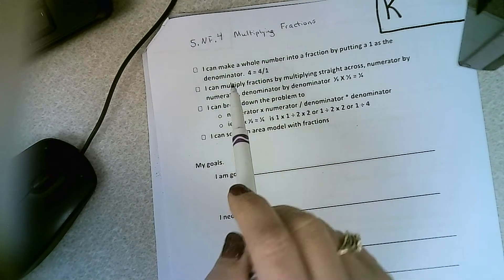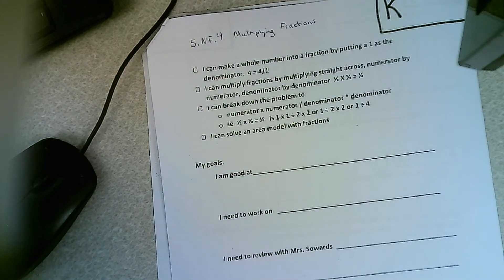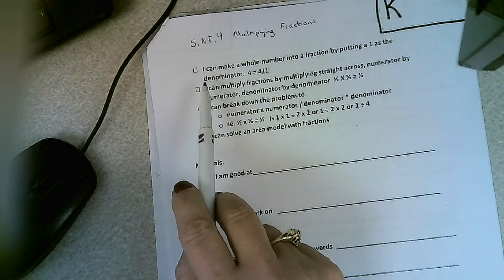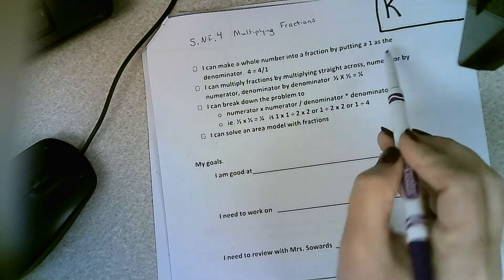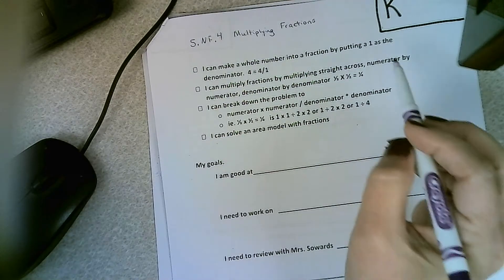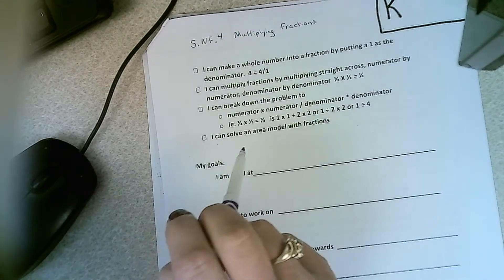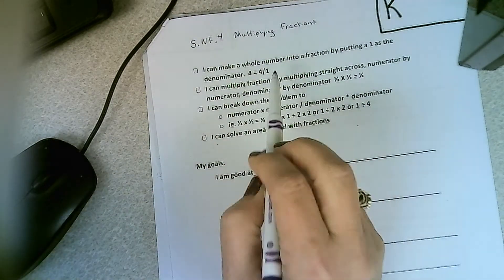So just real quick with the I can statements and then we'll start digging into it. I can make a whole number into a fraction by putting a 1 under it, right? 4 is 4 over 1. This is something we've already talked about.